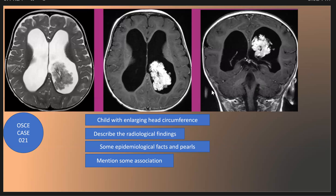Choroid plexus papilloma is a benign WHO Grade 1 intraventricular neuroepithelial tumor, and is the most common brain tumor in children under one year of age. The vast majority of patients present under five years of age, with a disproportionate increase in incidence in the first year of life.